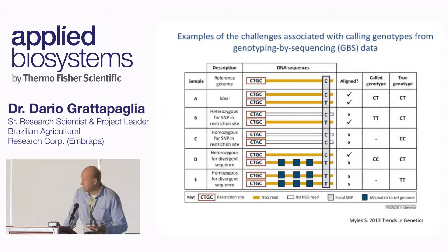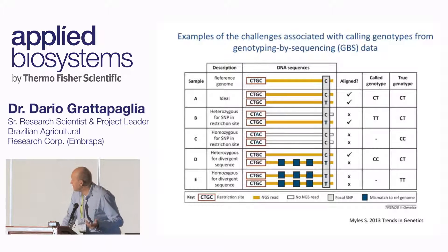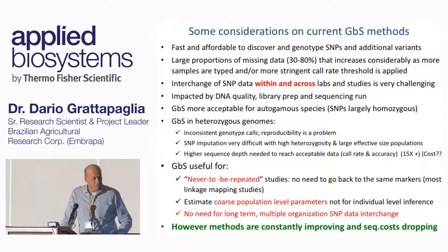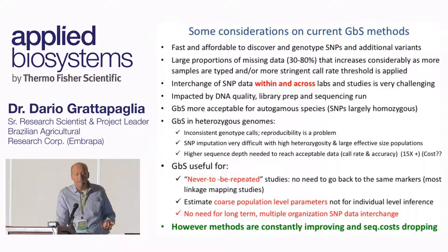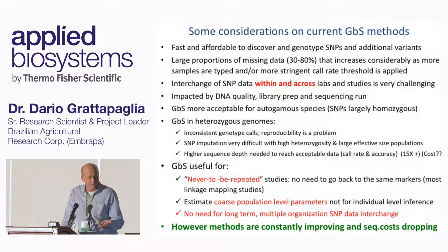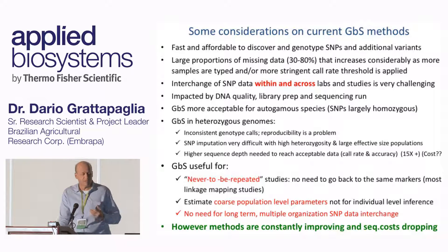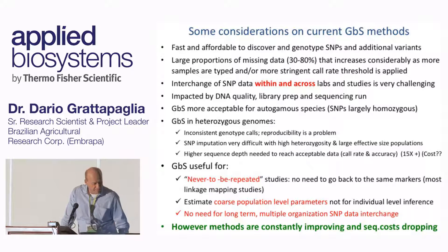This has been described — this particular review shows some of the events that cause a relatively large amount of missing data in restriction-based GBS methods. A final consideration for us is that if you have to run a study where you don't have to go back to the markers — what I call never-to-be-repeated studies, like building a linkage map or generating a diversity study — fine. But if you need to accumulate SNP data for many samples, run genomic predictions, and rely on those same markers five or ten years from now, you have to have very robust, high-quality data with very little or no missing data.